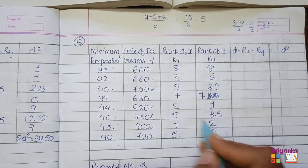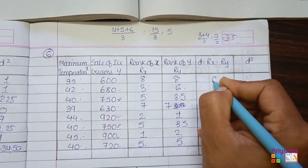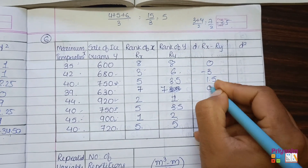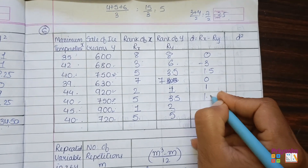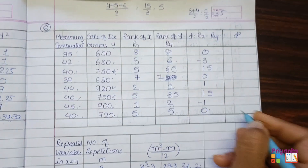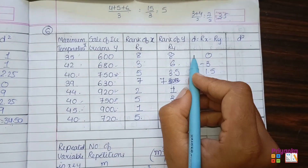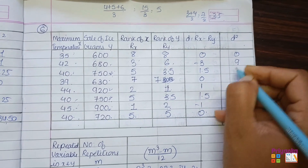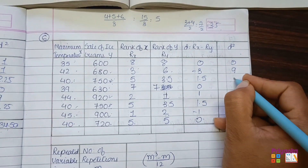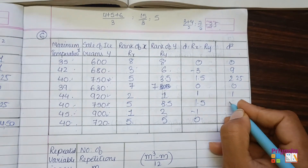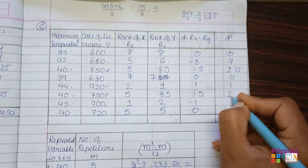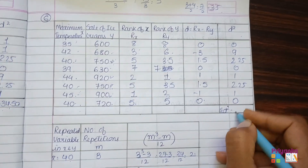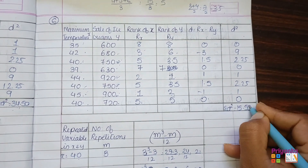Calculate D as the difference between Rx and Ry: 8−8=0, 3−6=−3, continuing: 0, 1, 1.5, −1, 0. Then D squared: 0²=0, 3²=9, 1.5²=2.25, 0, 1, 1.5²=2.25, 1²=1, 0. The total sigma D squared is 15.50.